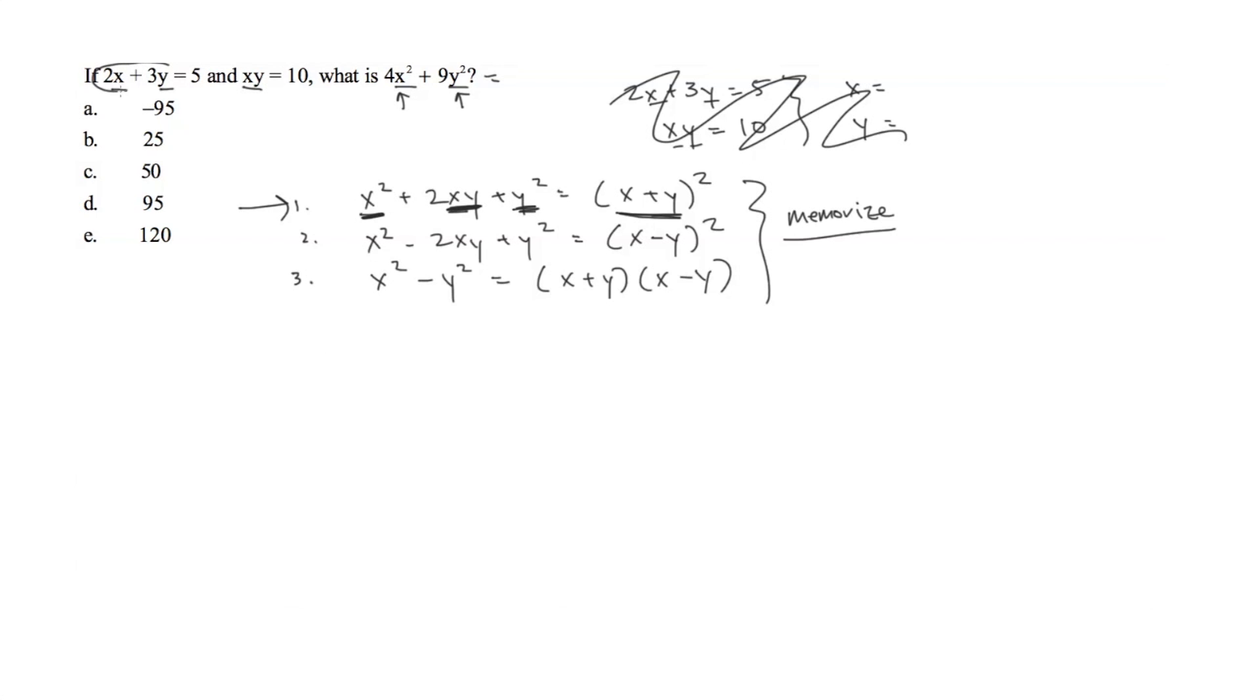I'm going to plug in this 2x plus 3y into this part of equation 1. So we have 2x plus 3y quantity squared. And that's, if I actually multiply that out, that's going to give us 4x squared plus 12xy plus 9y squared.